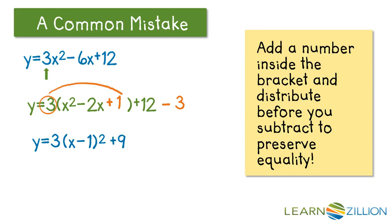Now if you forgot to distribute, you're going to end up with 3 times x minus 1 quantity squared plus 11, and that's not equal to the function that we started with.